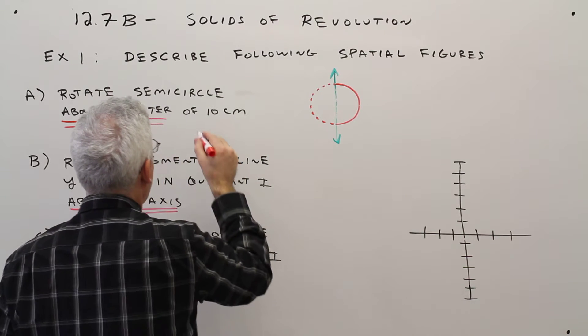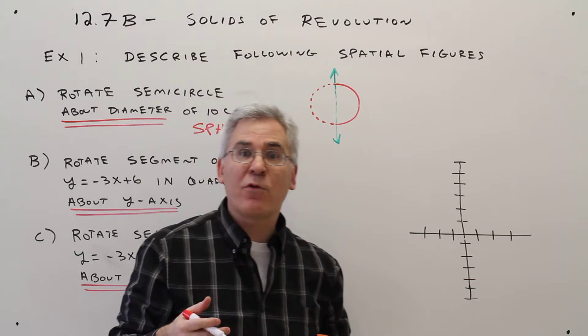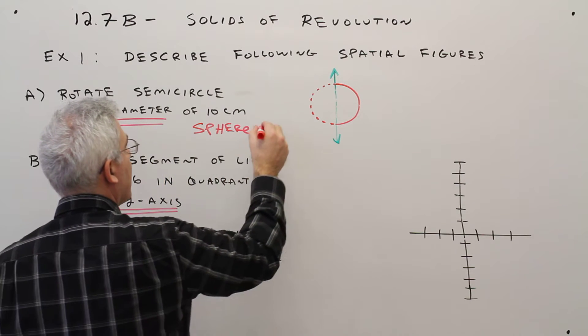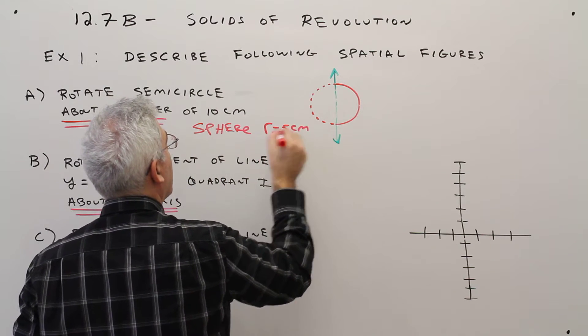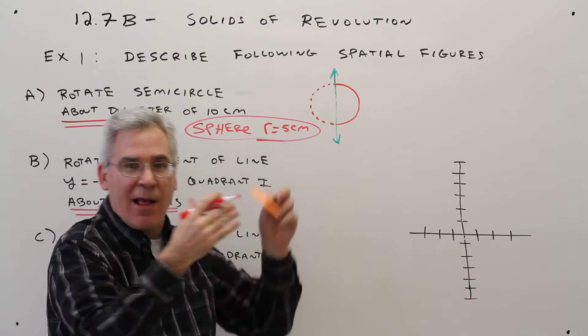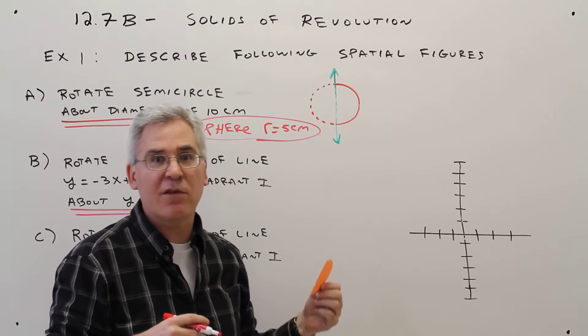Okay, so I'm going to say it's a sphere. And for spheres, normally I talk about the radius. So I'll say the radius is 5 centimeters. Again, by drawing that reflection helps me visualize what's going on better. And then if I could see in three-dimensional space, I'll see the sphere.